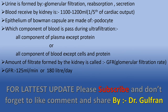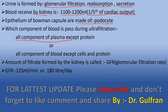Urine is formed by three processes: glomerular filtration, reabsorption, and secretion. The blood received by the kidney is one-fifth of the cardiac output, that is 1100 to 1200 ml. The epithelium of Bowman's capsule is made up of podocytes. During ultrafiltration, all components of plasma except proteins pass through — that is, all components of blood except cells (RBC and WBC) and proteins.